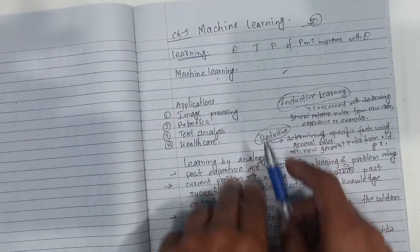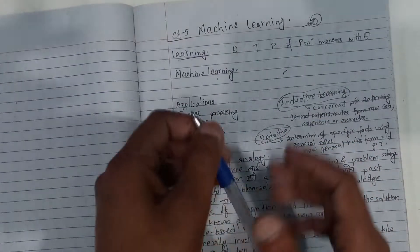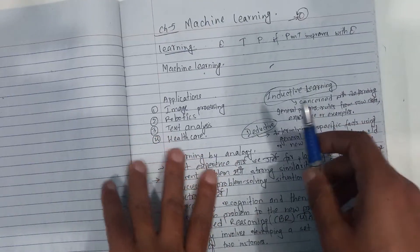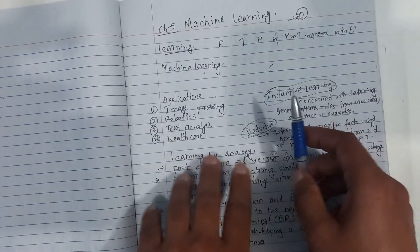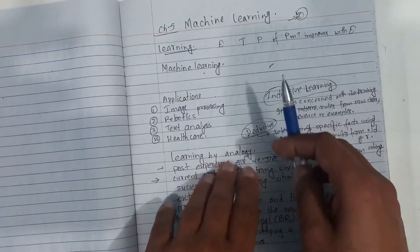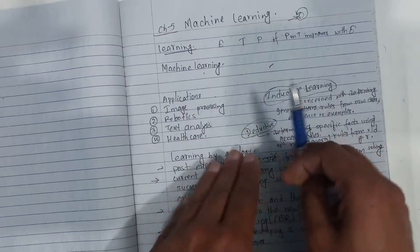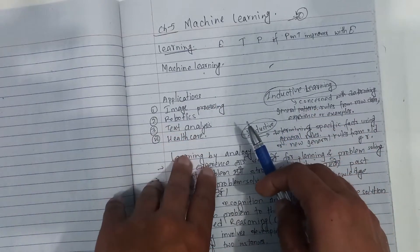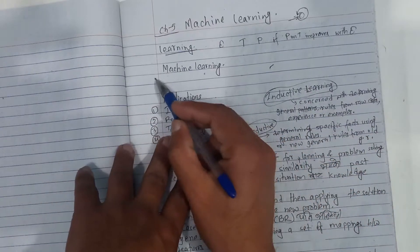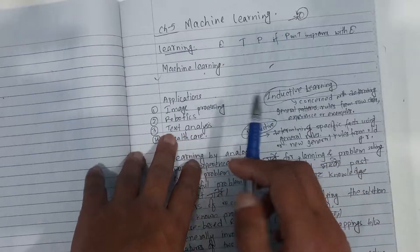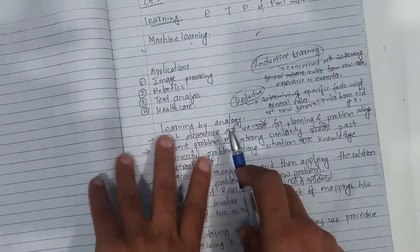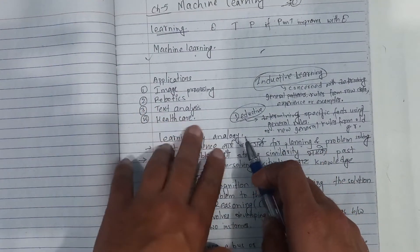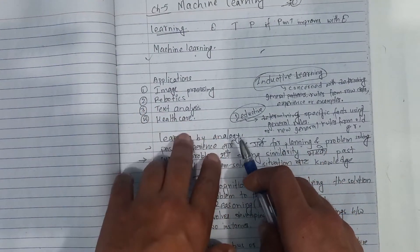Machine learning — that is the science, that is the branch of science, artificial intelligence — machine learning. Machine learning applications include image processing, robotics, text analysis, and healthcare.